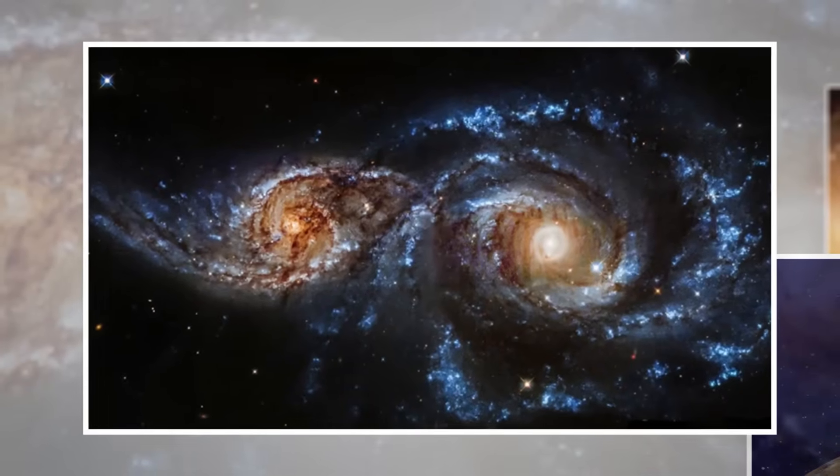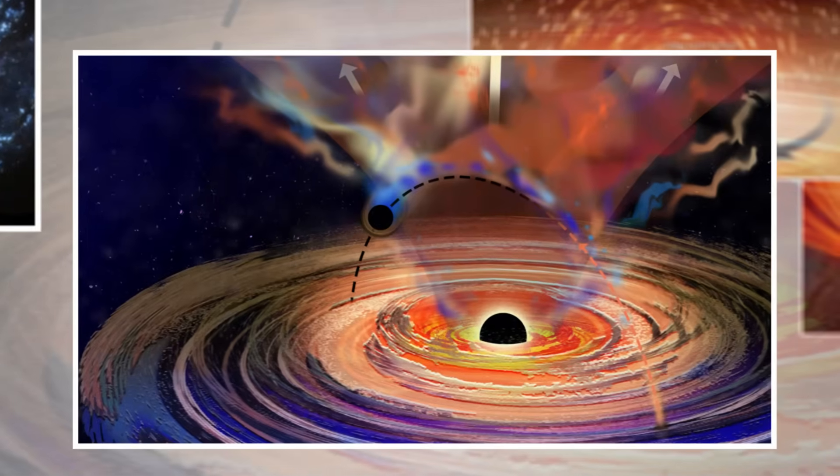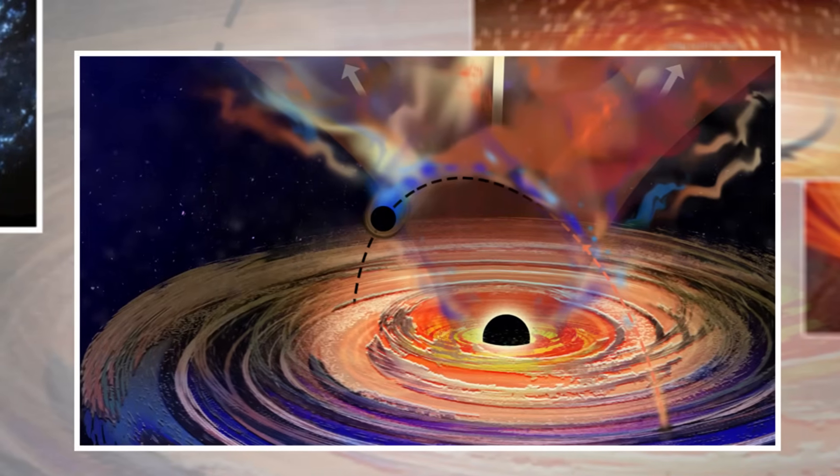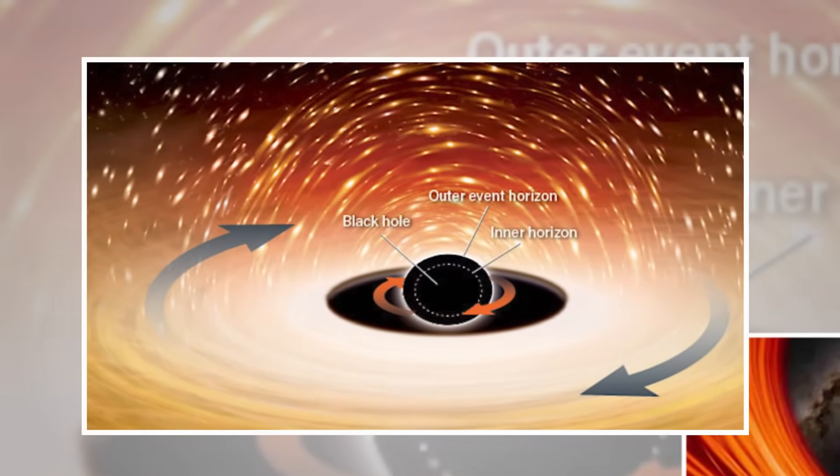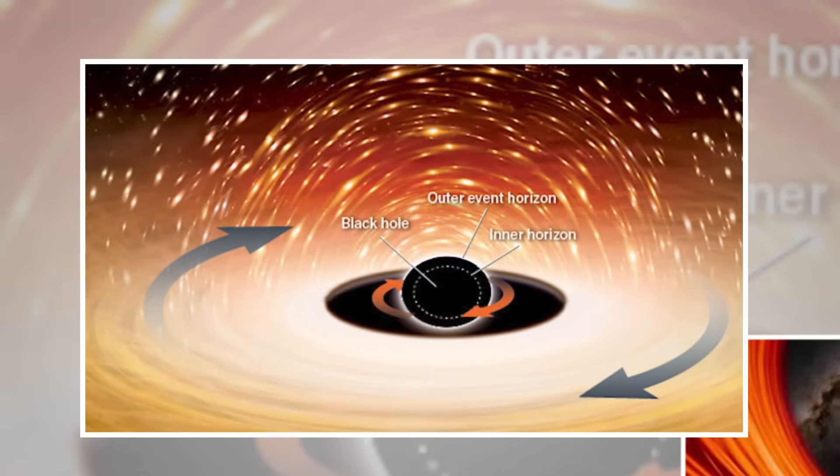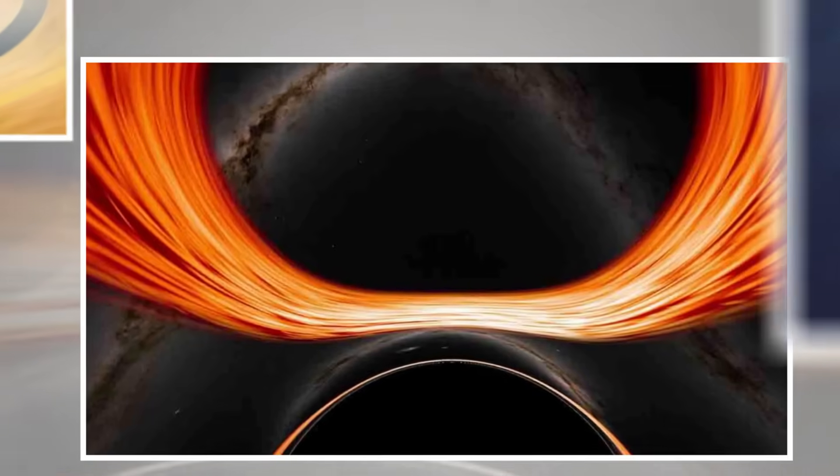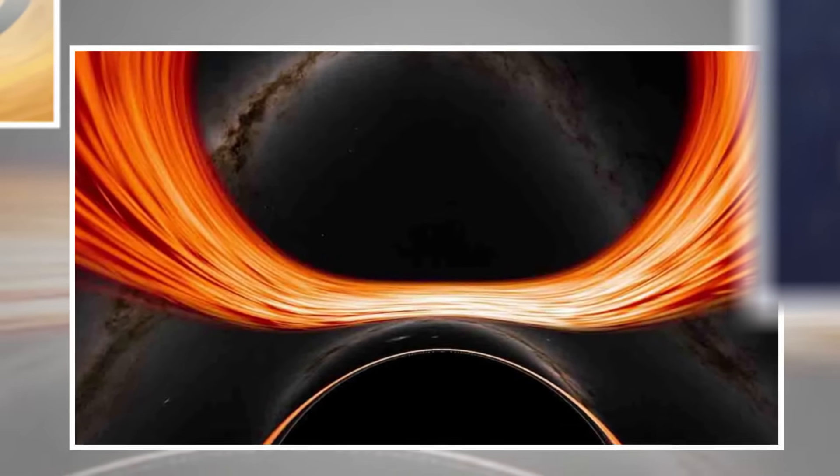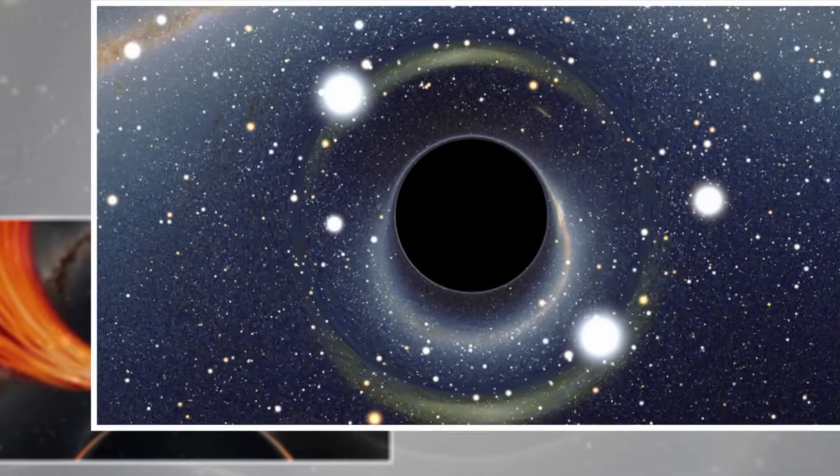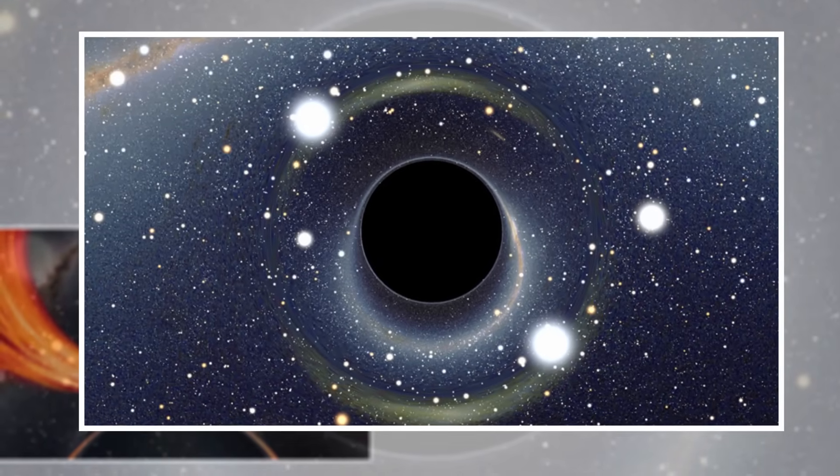For a long time, people thought of the Milky Way as one of the more powerful galaxies. But Andromeda's central black hole is bigger, stronger, and more dominant. That matters. A black hole's size affects how stars move, how galaxies evolve, and how gravity shapes space. Andromeda's larger black hole could mean that it's had a more intense history of feeding on stars, merging with smaller galaxies, or simply forming earlier in the life of the universe.